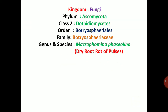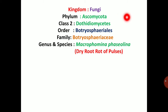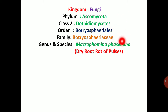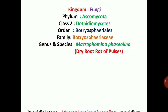Macrophomina fasciolina comes under kingdom Fungi, phylum Ascomycota, class Dothideomycetes, order Botryosphaeriales, family Botryosphaeriaceae, genus and species Macrophomina fasciolina, causing dry root rot of pulses.